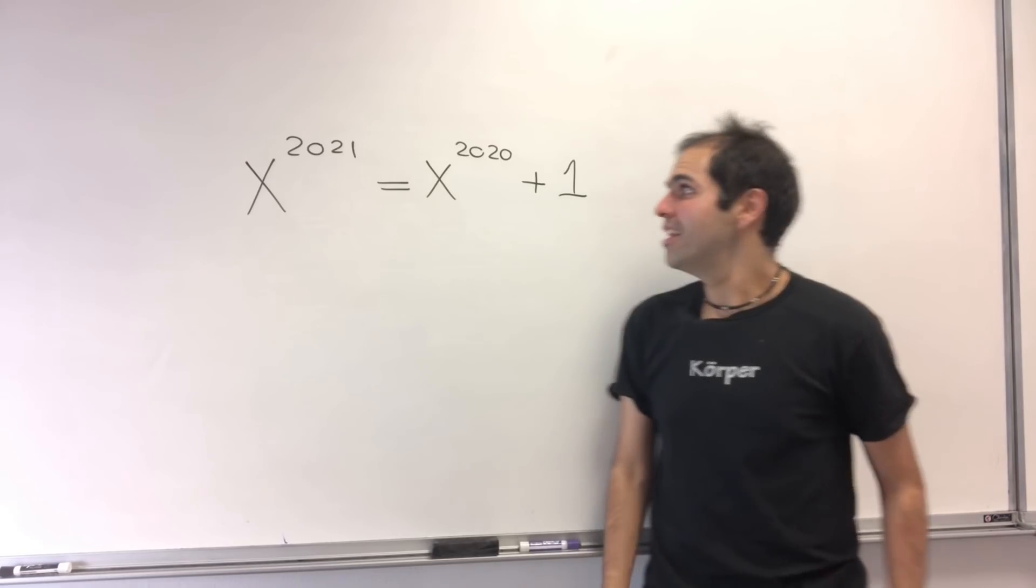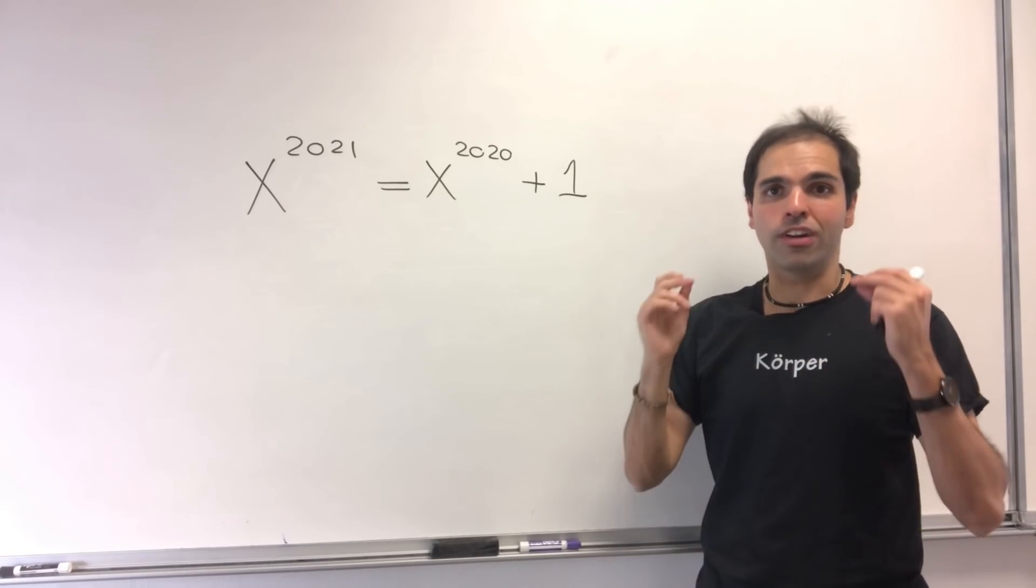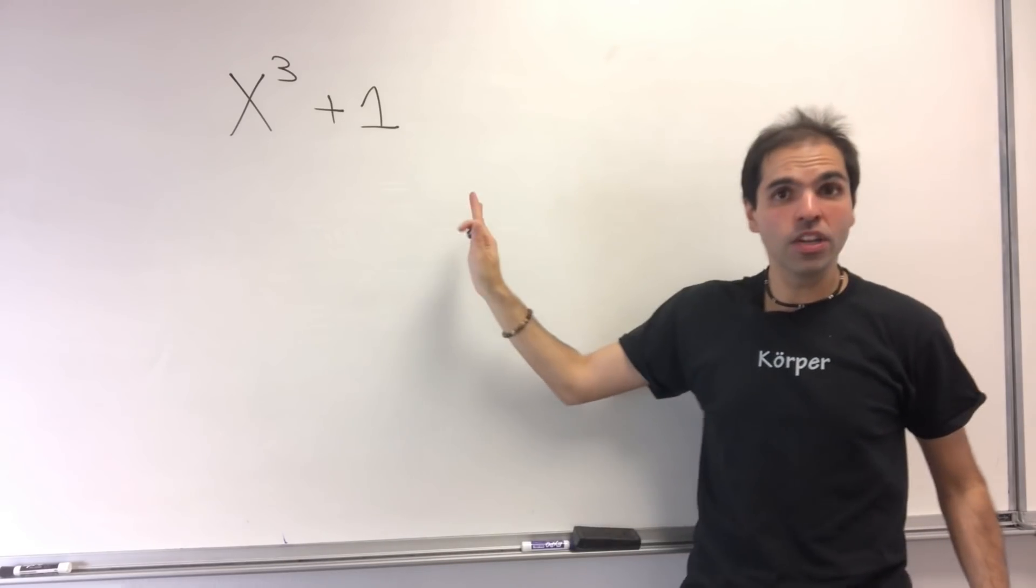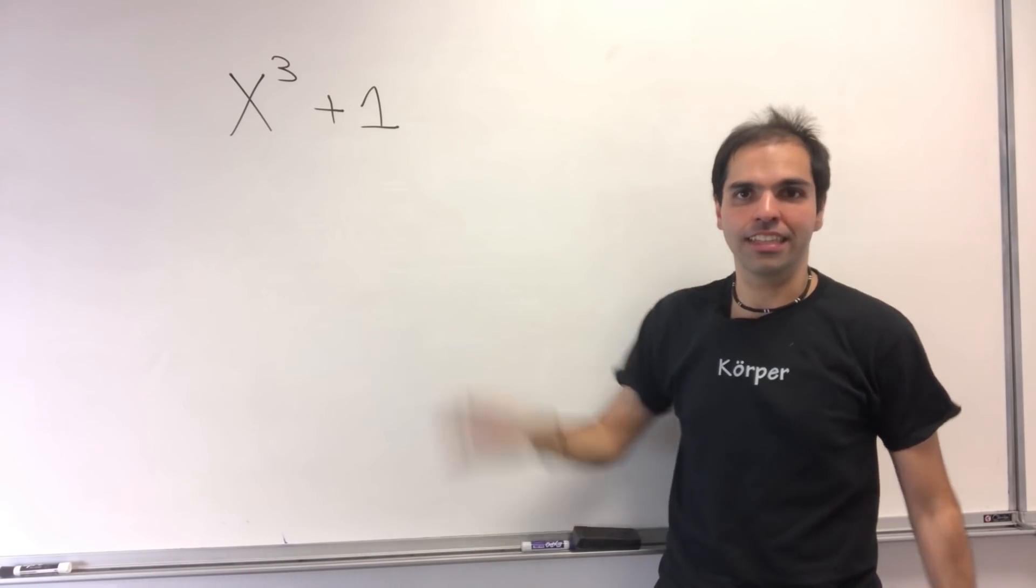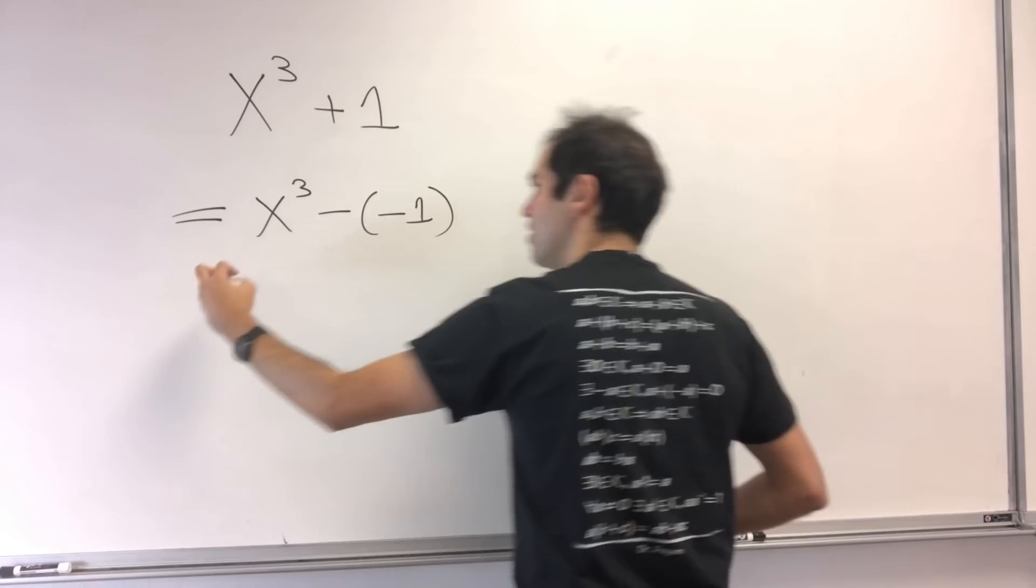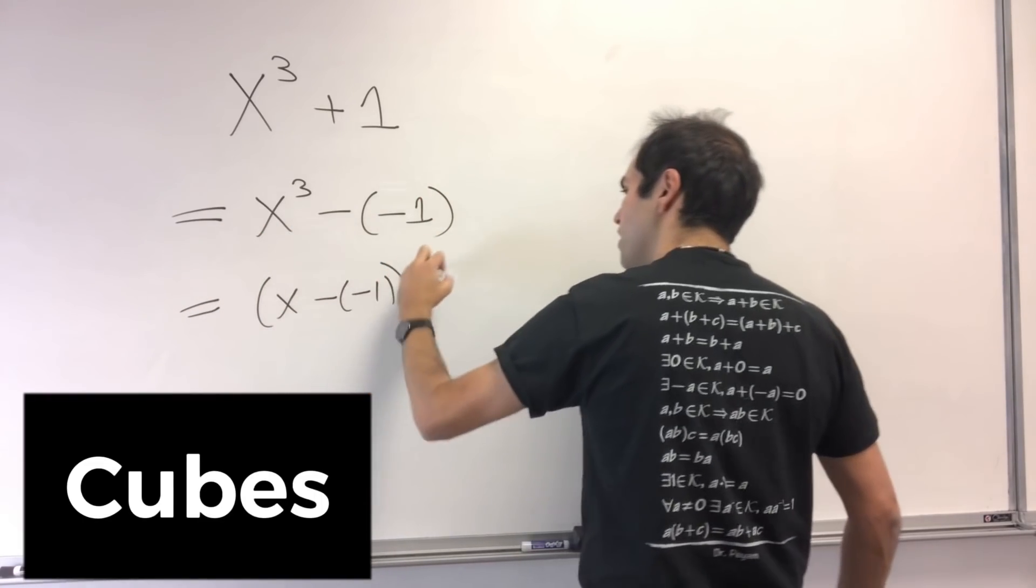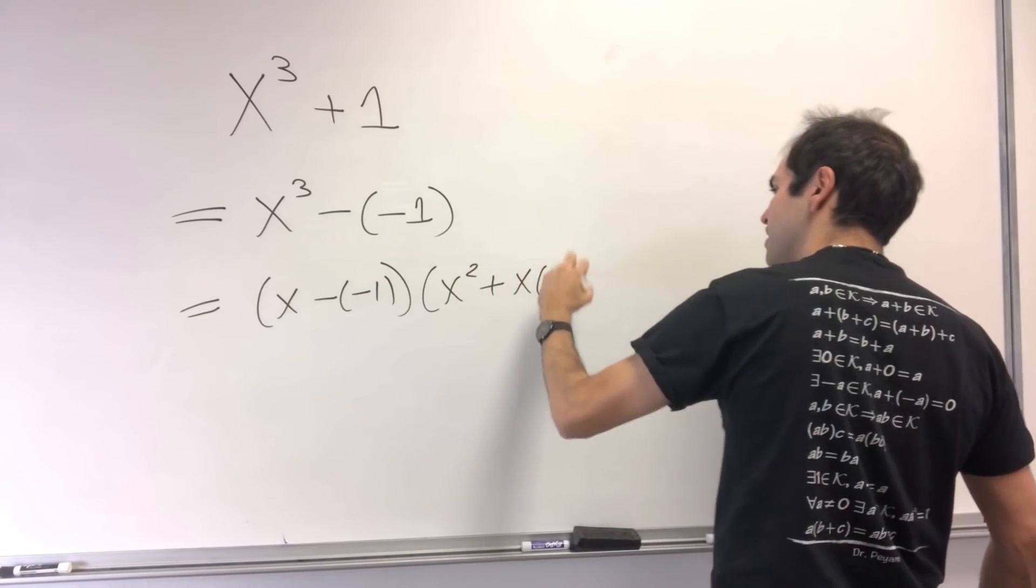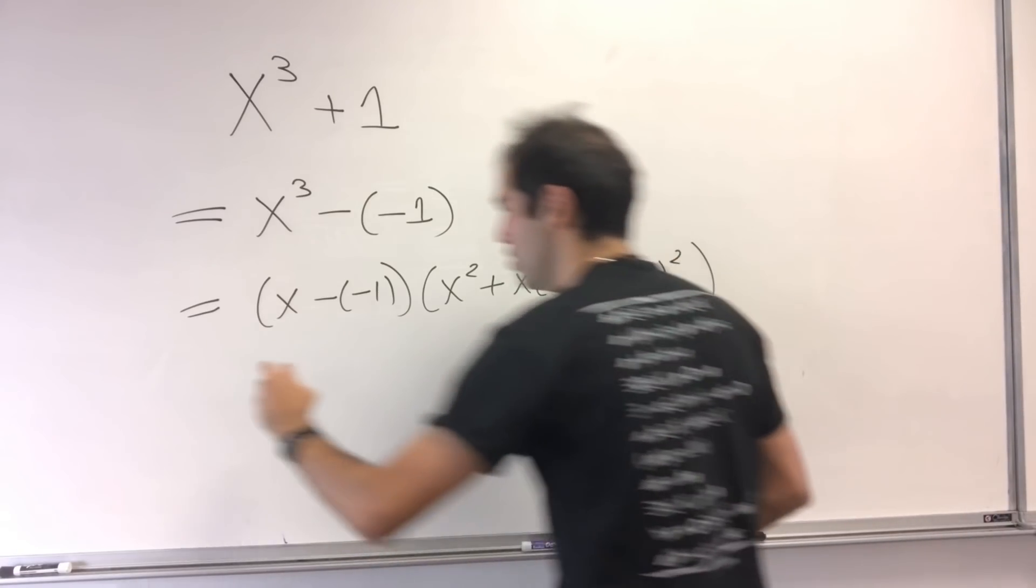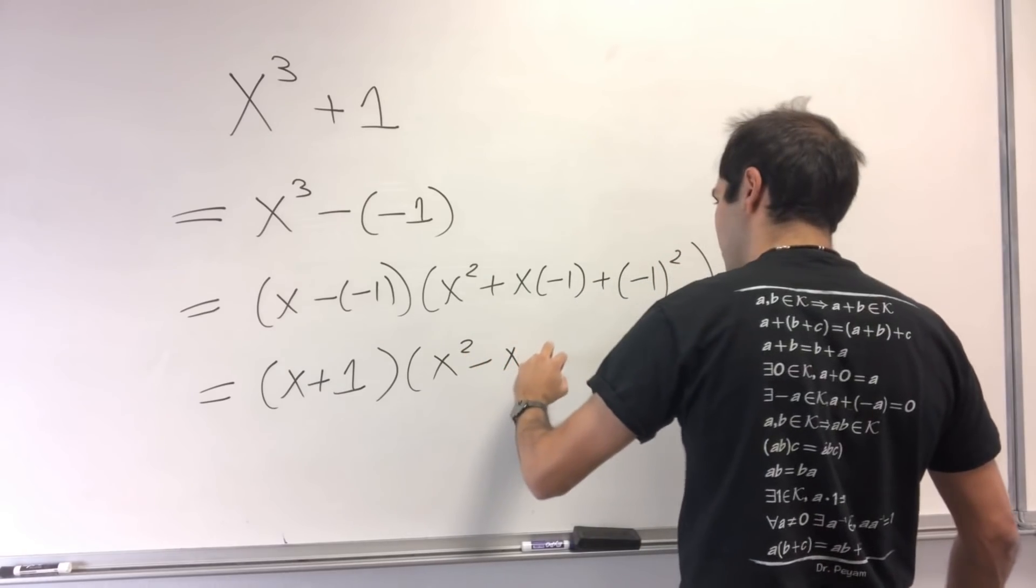And in order to solve this, let's consider a related equation, namely the following one. Let's look at the simpler polynomial x^3 + 1. And notice this one you can factor out quite easily, because x^3 + 1, that's x^3 - (-1), and that gives you (x - (-1))(x^2 + x(-1) + (-1)^2), which then gives you (x + 1)(x^2 - x + 1).